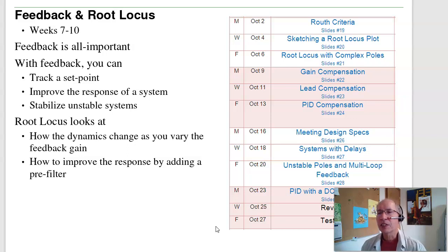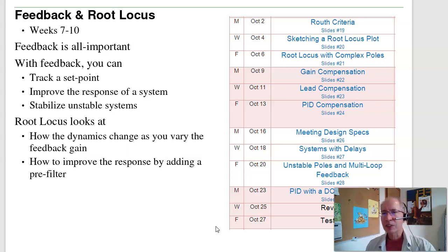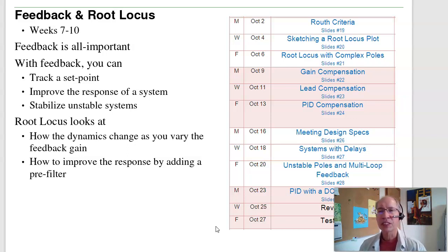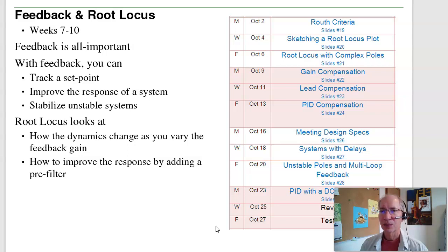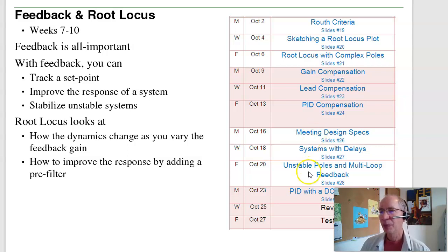During weeks 7 to 10, we'll look at feedback using root locus plots. As you close the feedback loop, the roots shift — similar to how when you learn to ride a bike, you eventually learn to adjust your weight to stay upright. Root locus shows how poles shift as you adjust the gains, and what gain is best. We'll also look at improving the system with compensators: lead, PID, using root locus techniques, and we can even control systems with delays and unstable systems.